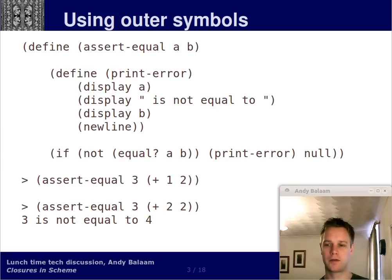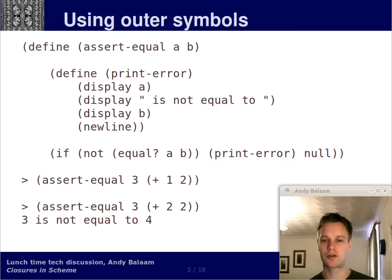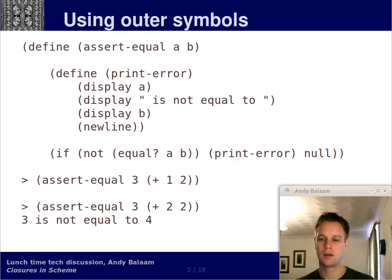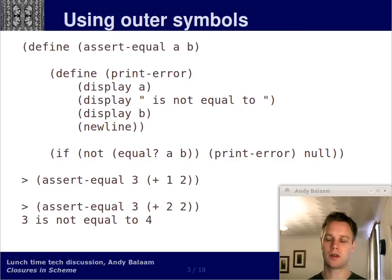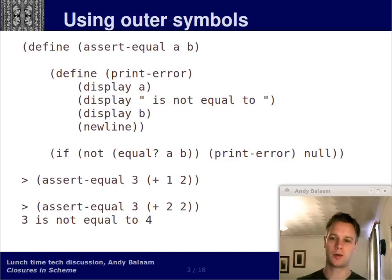What we've got there is an if expression all on one line. The first bit — that not-equal bit — is the expression it's evaluating. If that comes out as true, as in the two are not equal, we print an error. Otherwise we return null. In this case, we don't care about the return value of this function. All we care about is if it goes wrong, we're going to print an error.